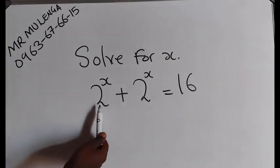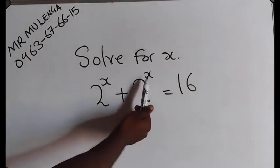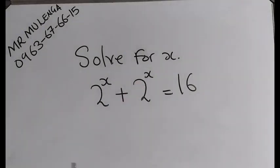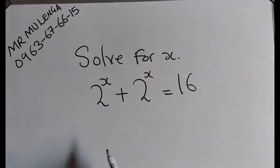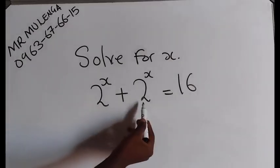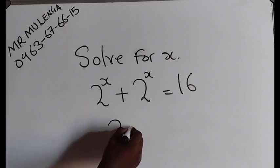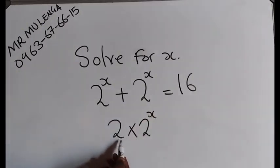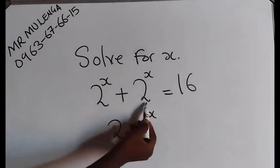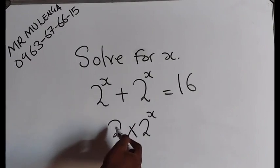What you are going to do is, you can check the term that you have here is 2 to the power of x, even this one 2 to the power of x. This simply means that the same term is being added with another term. How many are they? They are 2. So in short, you can do this. You say 2 times 2 to the power of x. The reason why I've written 2 is because I'm adding the same term, 2 to the power of x plus 2 to the power of x. Hence, I've written 2 in short.